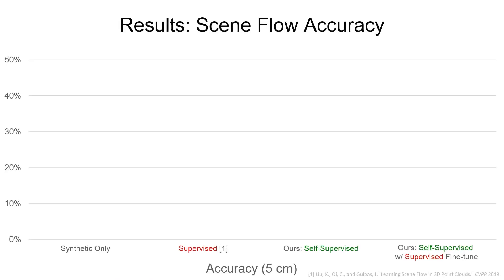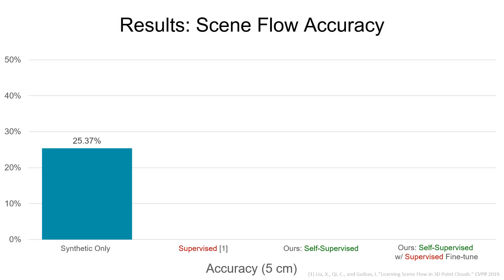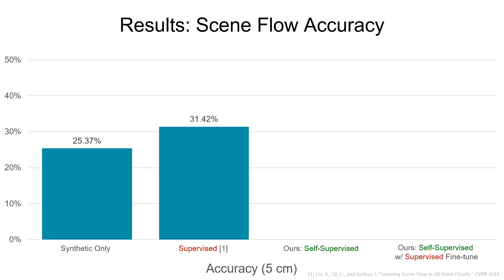We test our method on the KITTI Scene Flow dataset using the FlowNet3D network architecture. A model trained on purely synthetic data is able to estimate scene flow, with 25% of the predictions falling within 5 centimeters of the ground truth flow.